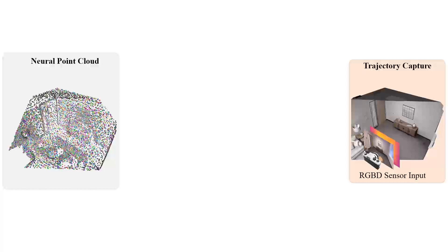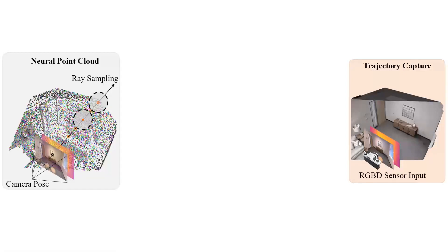We use a re-rendering loss to the observed sensor input to optimize the map or the camera pose. To render color and depth from a given camera pose, we march along the ray into 3D space and sample points around the depth observed by the sensor.